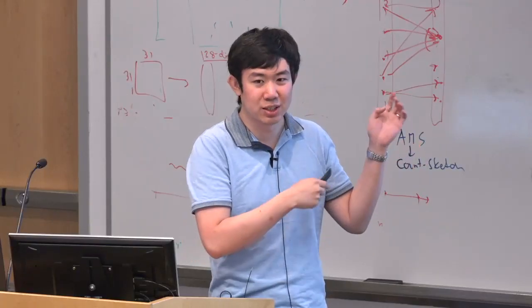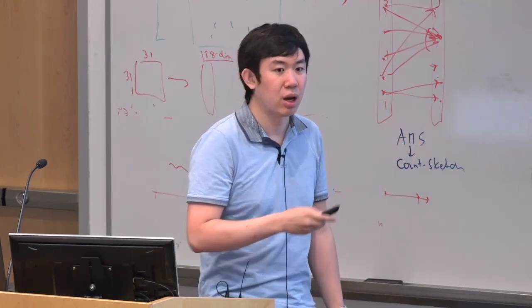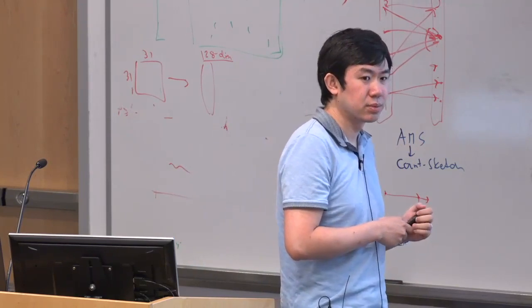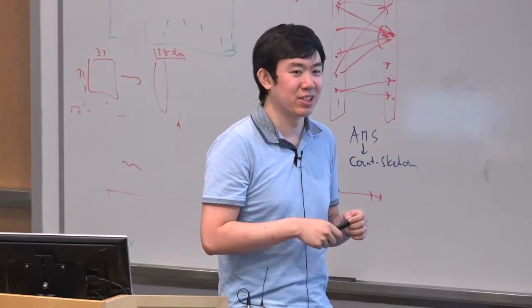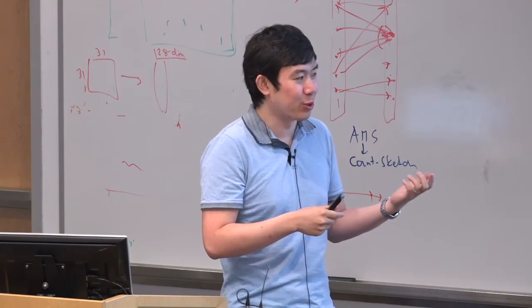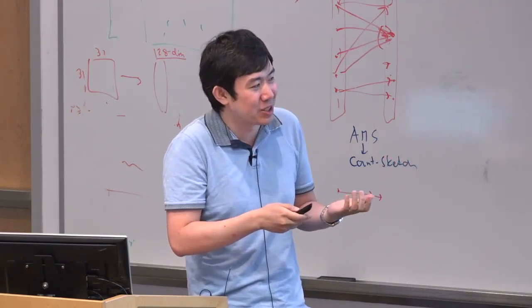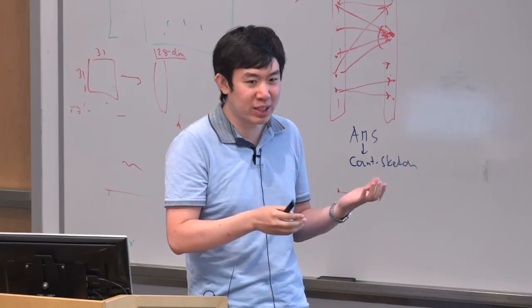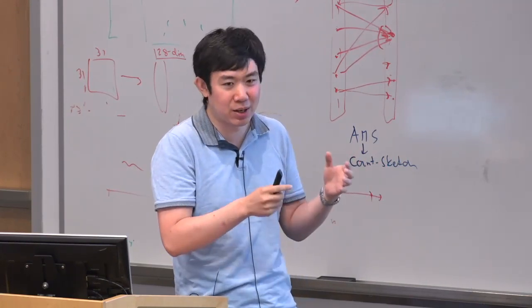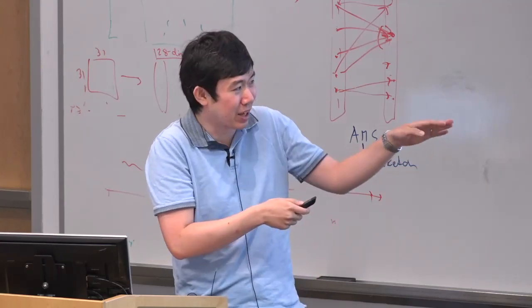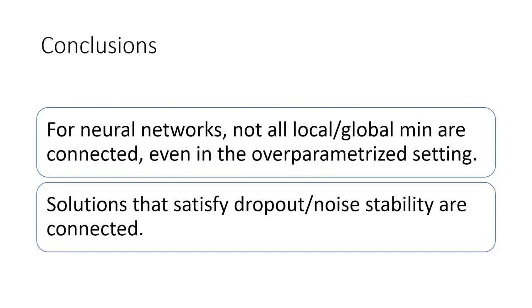Question: is this path constructed according to your theorem? Yes, exactly according to the theorem I showed. Question: how do you test whether a local minimum is dropout stable? The existential version is hard to test, but we just randomly drop out half of the neurons to efficiently test. If we had a better way of pruning neurons to produce a smaller neural network, we would likely get better performance.